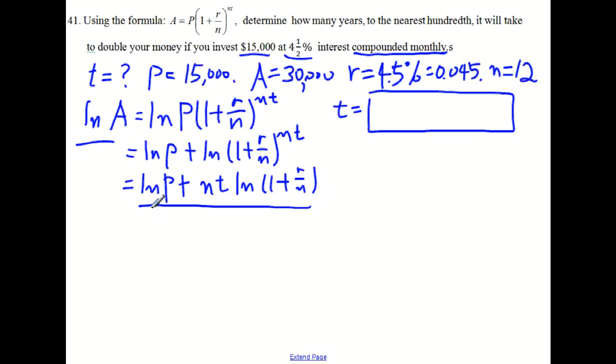So first, we remove this term ln of P out of the right side. So we subtract ln of P from both sides of the equation. So we get ln of A minus ln of P on the left side. And on the right side, we have this ln of P disappears. And we get nt times ln of 1 plus r over n.